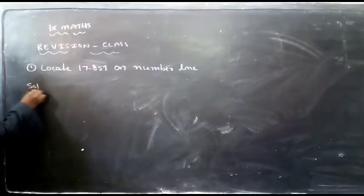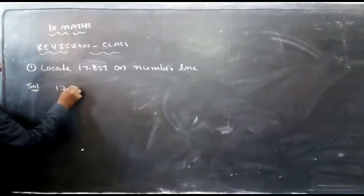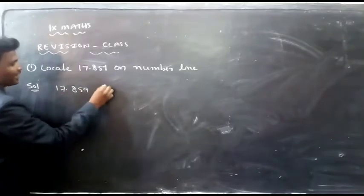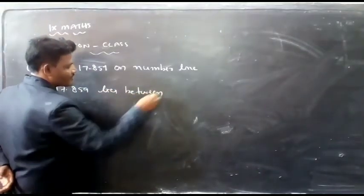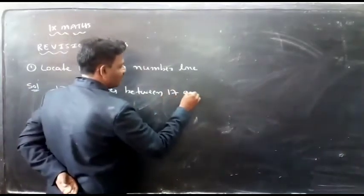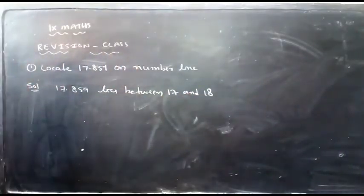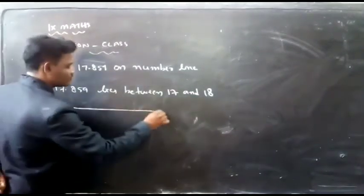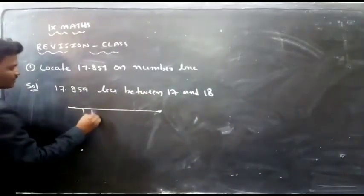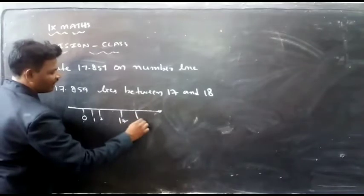Solution. First of all, 17.89 lies between 17 and 18. On the number line, starting from zero, one, two, and so on, up to 17 and 18.